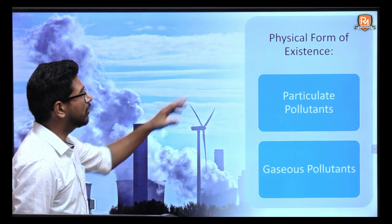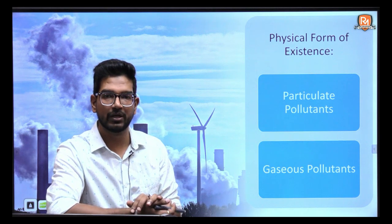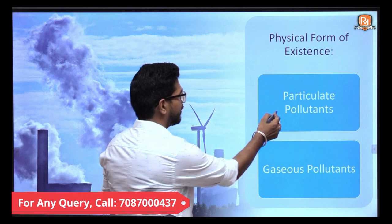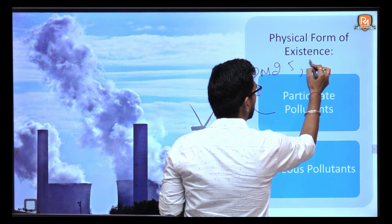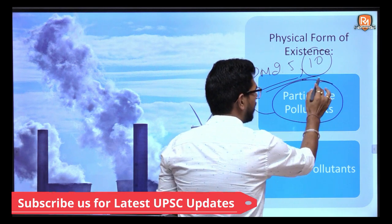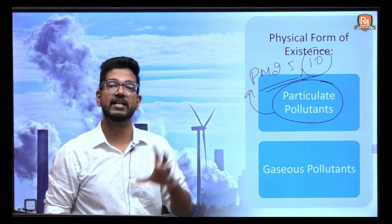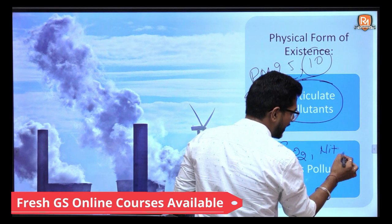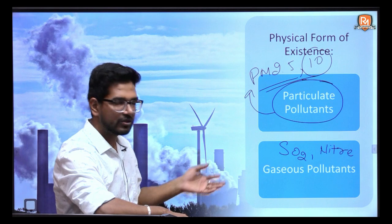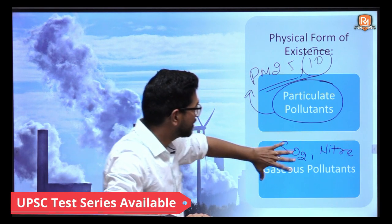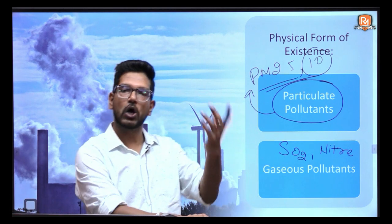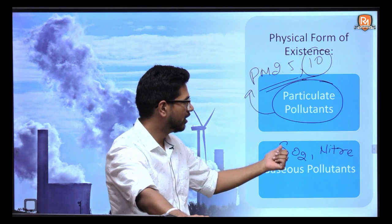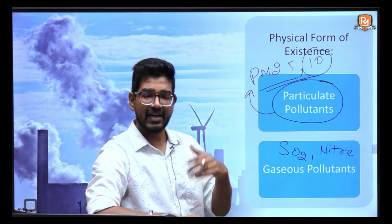On the basis of physical form, air pollution can be categorized as particulate pollutants or gaseous pollutants. For example, PM 2.5 and PM 10 are particulate pollutants — they are physically solid in nature. Whereas sulphur dioxide, oxides of nitrogen, and any other gas that pollutes the air are covered under gaseous pollutants.